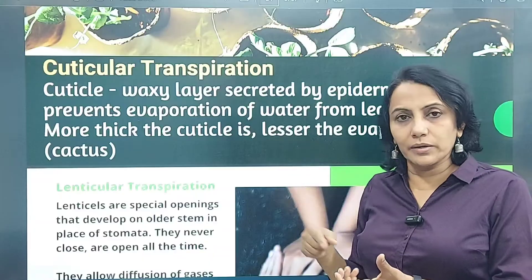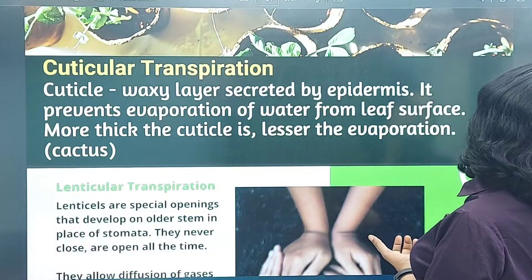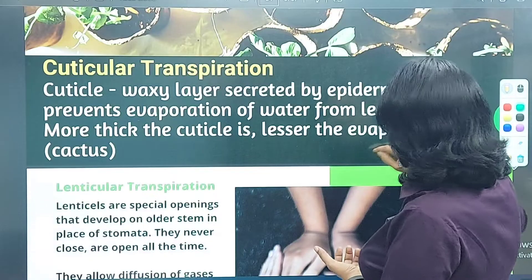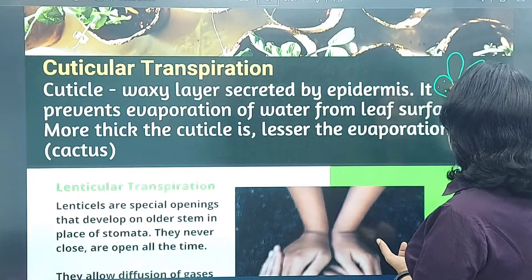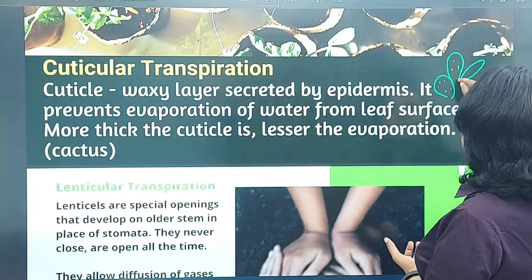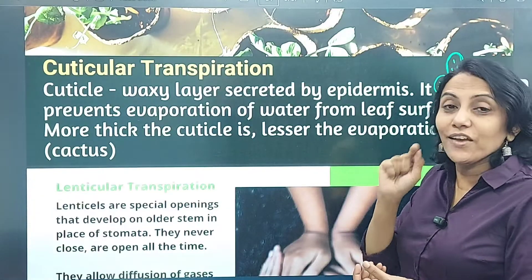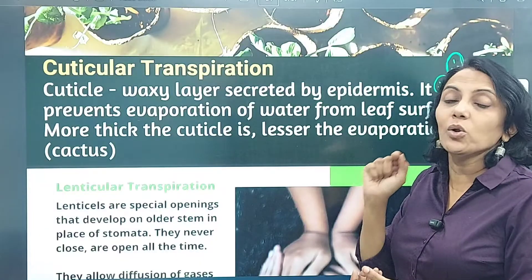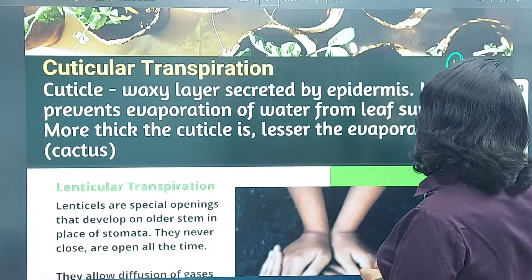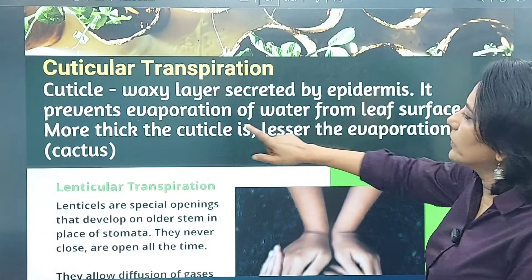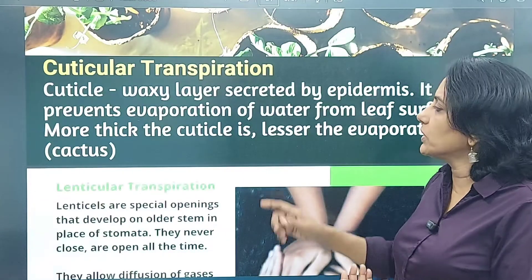A cactus is an example of desert adaptation. The thick green part you see is actually a stem, and the thorns are actually modified leaves — leaves have been modified into thorns to minimize the surface area and reduce water loss. Cactus grows in deserts where water is very minimal. Desert plants have a thick cuticle so that less transpiration occurs.